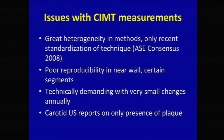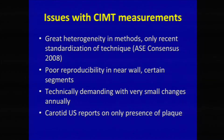There are problems with carotid IMT, especially the measurement. A normal IMT could be 0.6 or 0.7 millimeters, so the margin for error is very minimal. There is heterogeneity in methods, although the ACC had a consensus document from 2008 which is very well written — I would highly recommend you read it. There's poor reproducibility in the near wall. Technically it is demanding, as changes are very small annually — an IMT change of 0.1 millimeter is significant, but you can get that change simply from the angle of your transducer, so everything must be standardized. The carotid reports we currently have only report on the presence of plaque and do not comment on IMT, so it's not widely available — you need a very good lab.